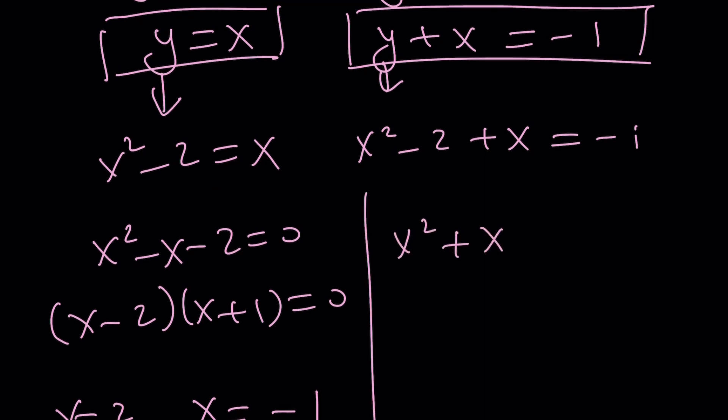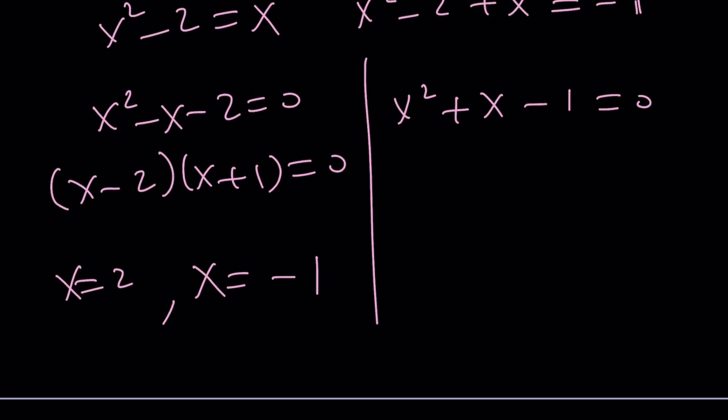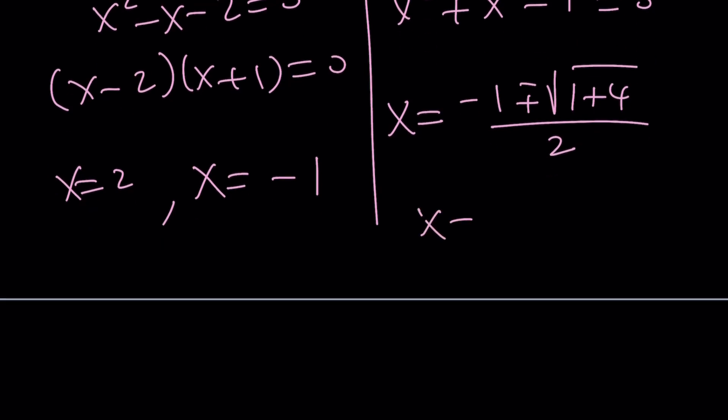x squared plus x minus 1 equals 0. You should remember this problem. Quadratic formula gives us negative b plus minus the square root of b squared minus 4ac. That's going to give us square root of 5. Do you recognize this? If it's the golden ratio, then you're totally right about that. But there are two solutions. And let me tell you something.